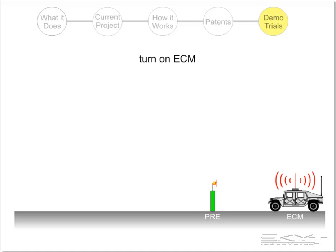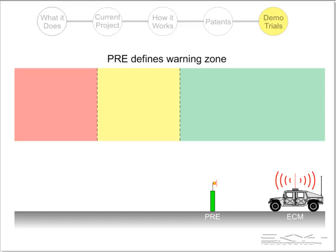We then turn on the ECM, and the PRE device defines the warning zone, which is shown in yellow, and which separates the safe area, shown in green, from the unsafe or dangerous area, shown in red.